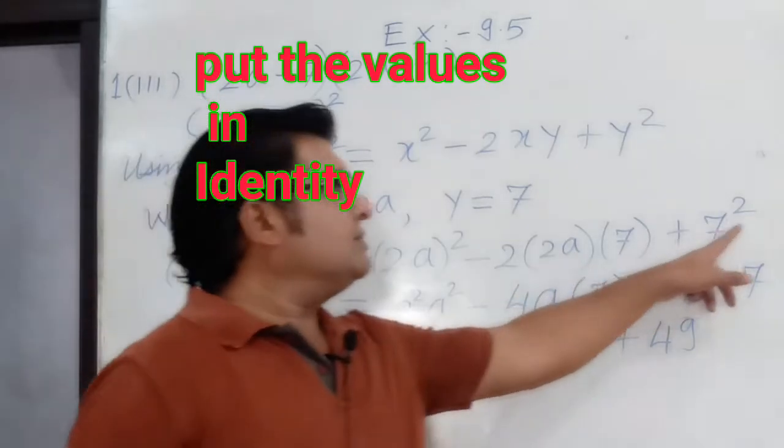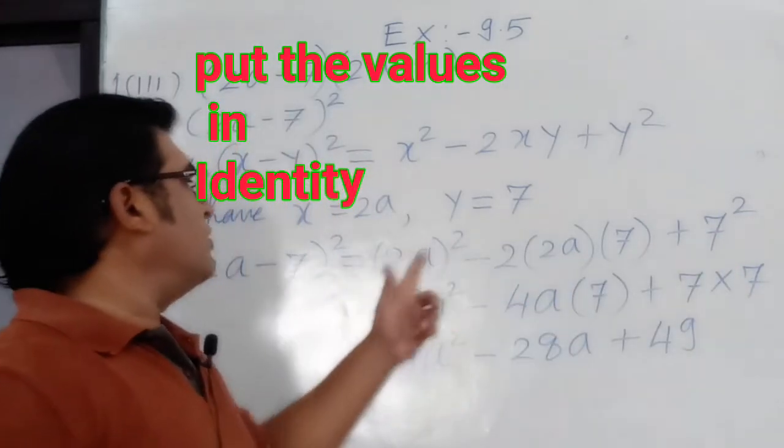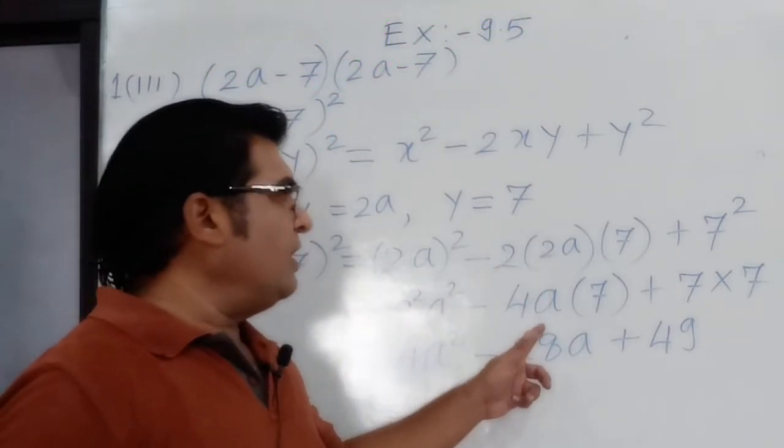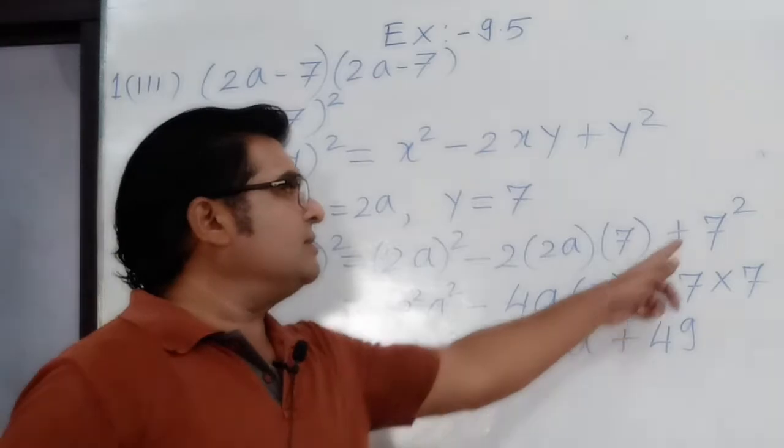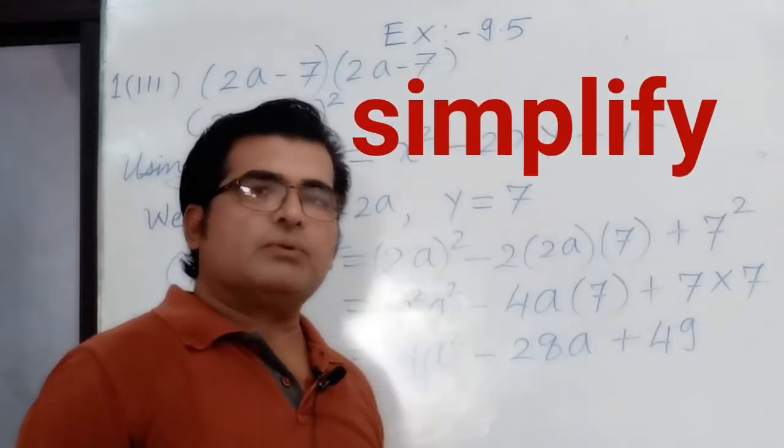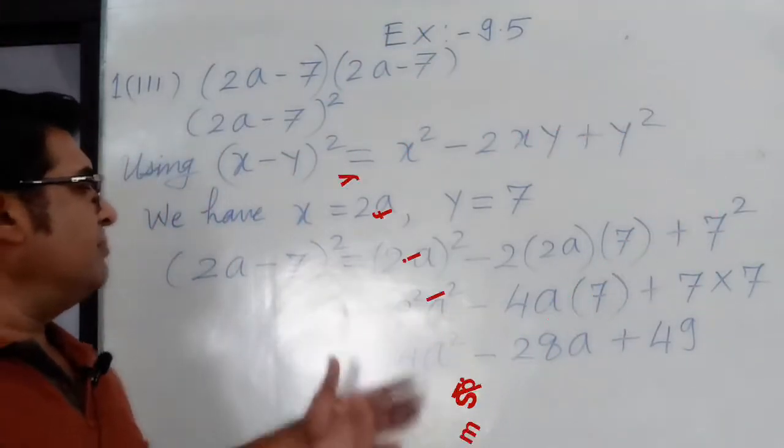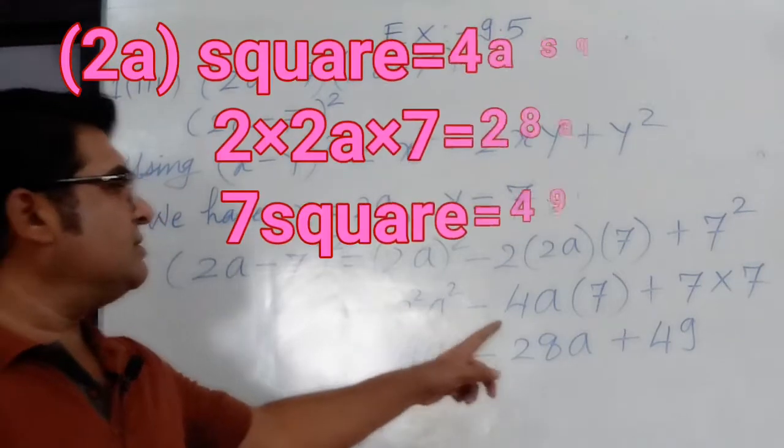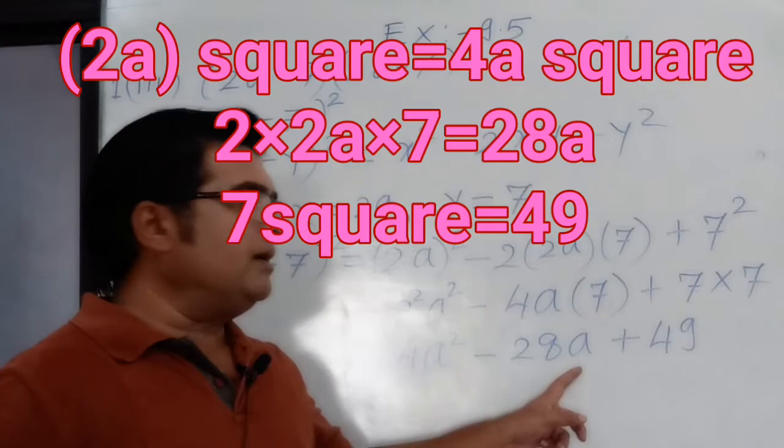So it equals 2 square a square minus 2 into 2a is 4a minus into 7 plus 7 square is 7 into 7. Then simplify more: 2 square is 4a square minus 4 times 7a is 28a plus 7 times 7 is 49.